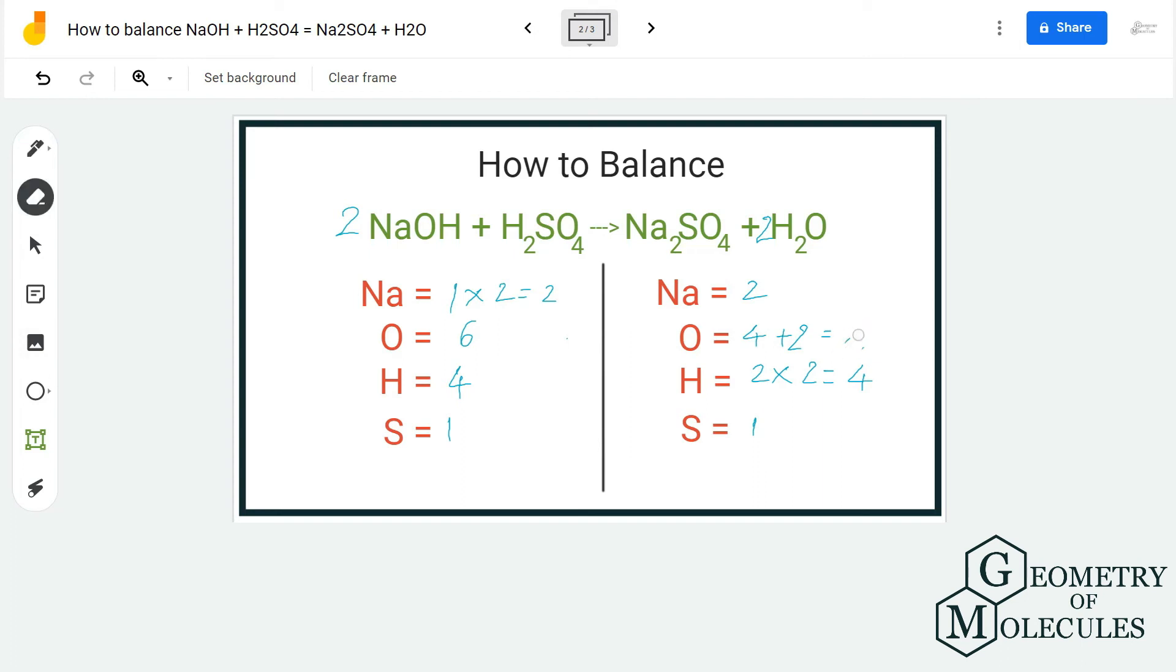So now if you check, the reactant side and the product side match by adding 2 NaOH and here making it 2 H2O. So this is the balanced equation in which we are getting the final equation as 2 NaOH plus H2SO4 gives us Na2SO4 plus 2 H2O.